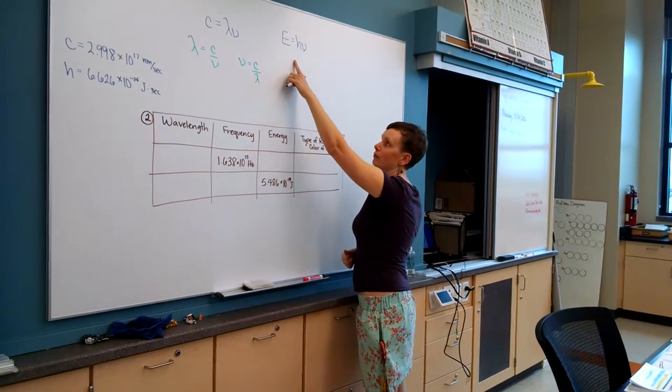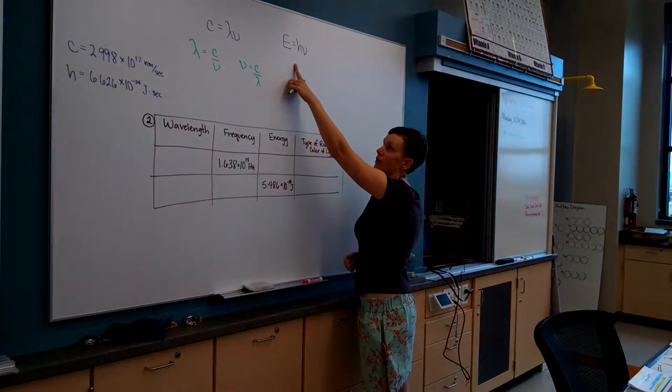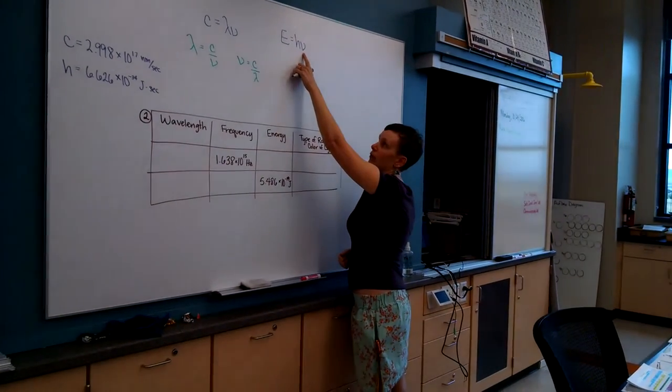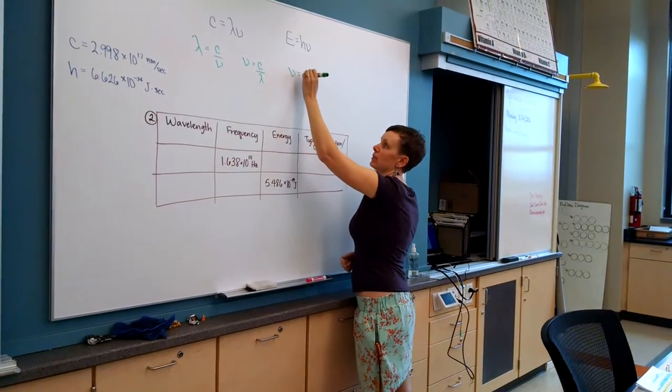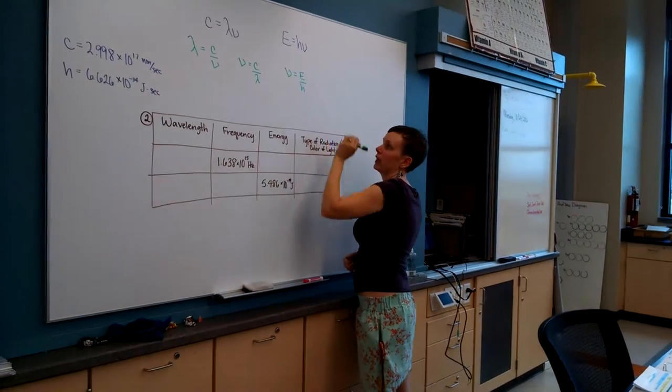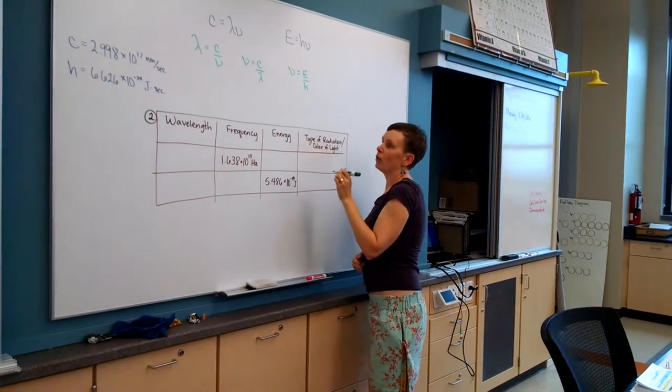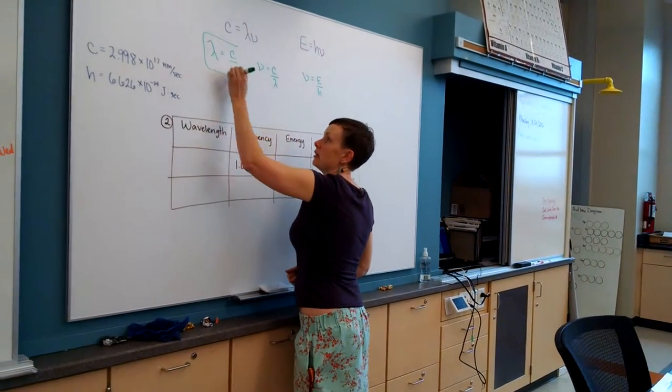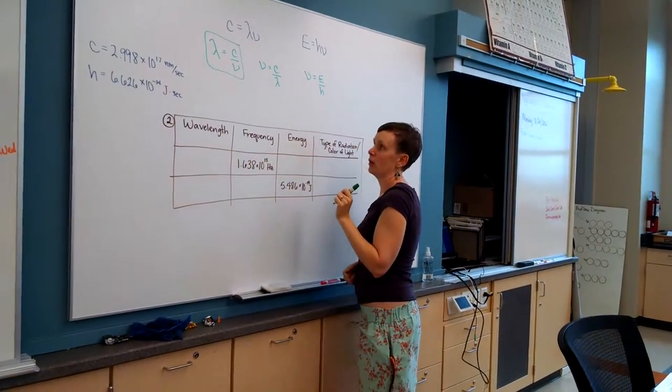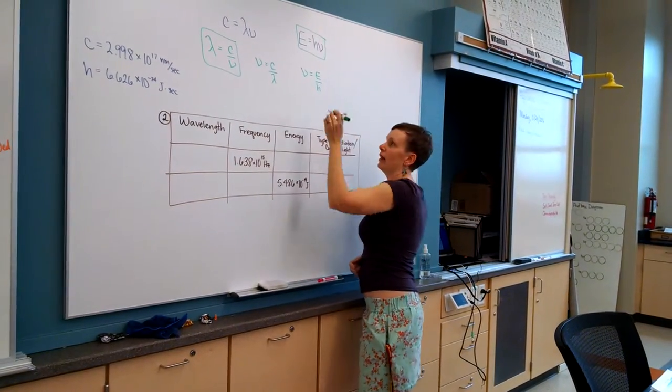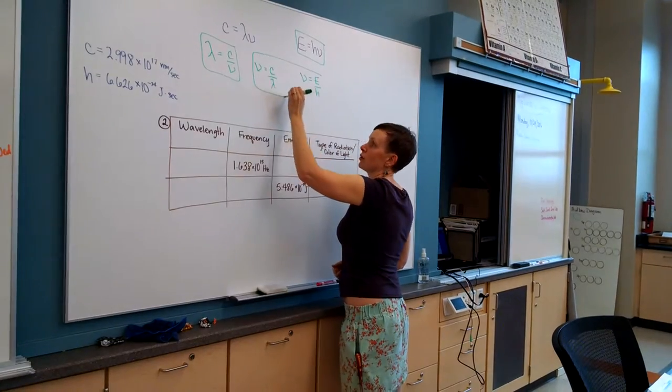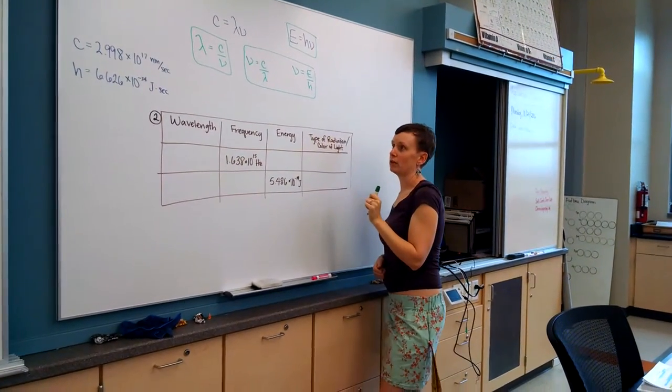The third part asks us to solve this equation for frequency. We divide both sides by H to get frequency by itself, so frequency equals energy over Planck's constant. We're going to be using this equation when trying to find wavelength, this equation if we're trying to find energy, and then we'll use one of these when trying to find frequency, depending on what information we're given.